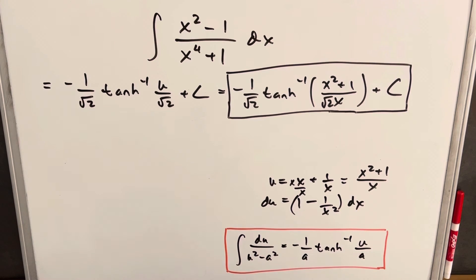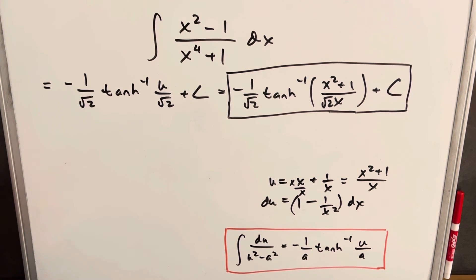The key was multiplying by 1 over x squared — that really simplified things a lot. We were able to avoid partial fractions, which could have made this a much longer problem. So we'll stop it there. Thank you for watching.